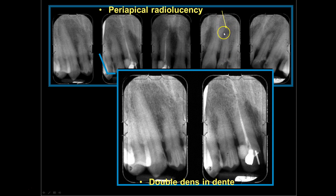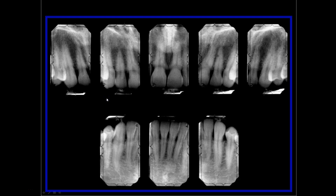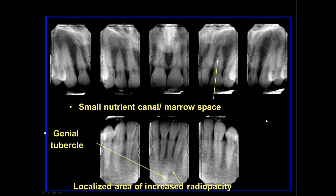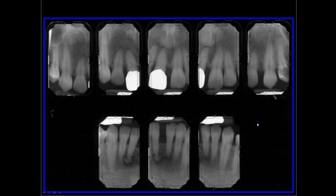We have a radiolucency on this section of the film, as well as what is called a dens in dente — that's a tooth inside a tooth. There's a small nutrient canal, very narrow marrow space. Genial tubercles look like a localized donut hole — a tubercle with a foramen in the middle. And we have some very irregular periapical lesions in these areas.